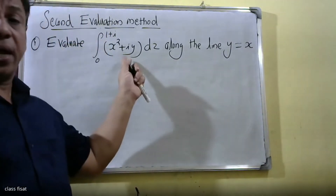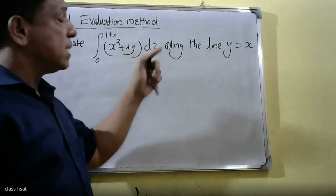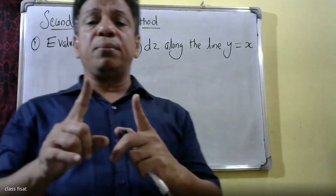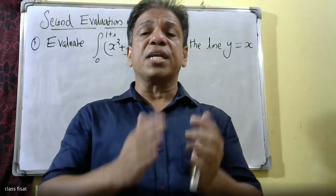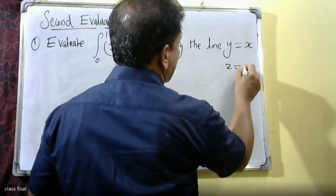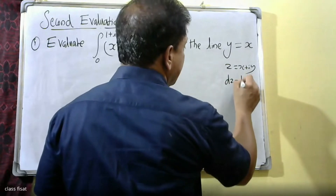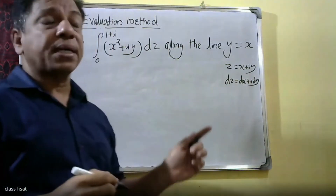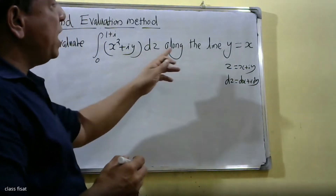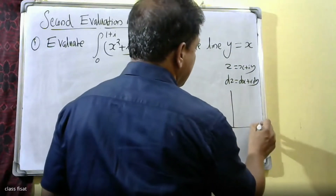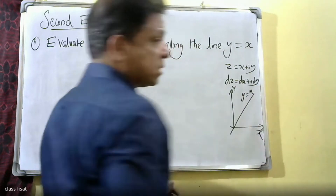The first evaluation method is to write the variable. We write z equal to x plus iy. We consider the line integral of x plus iy with dz along the line, where y is equal to x.